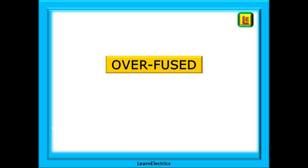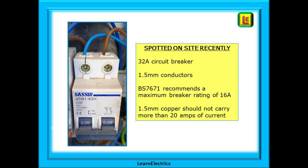Let's begin with an example of over-fusing. This happens when a circuit breaker or a fuse is installed that far exceeds the expected working current of the circuit, and this is often the result of the person installing it — the householder doing some DIY — not knowing what they are doing. This example shows a 32 amp breaker protecting a lighting circuit that is wired in 1.5 millimetre conductors, spotted on site recently. BS 7671 recommends that circuit breakers for lighting circuits should be 16 amps as a maximum, and in this case 6 amps would have been more than sufficient. Also, 1.5 millimetre copper conductor has a maximum rating of 20 amps. This shows the importance of visual checks.